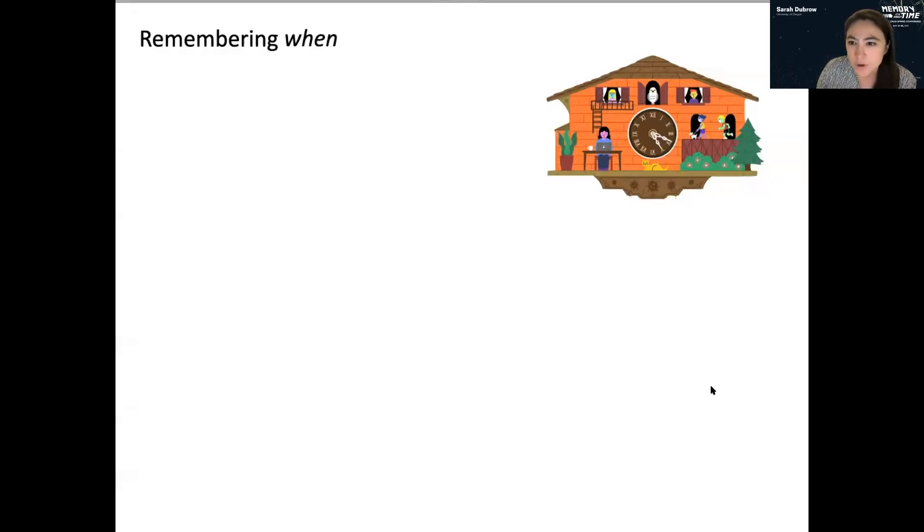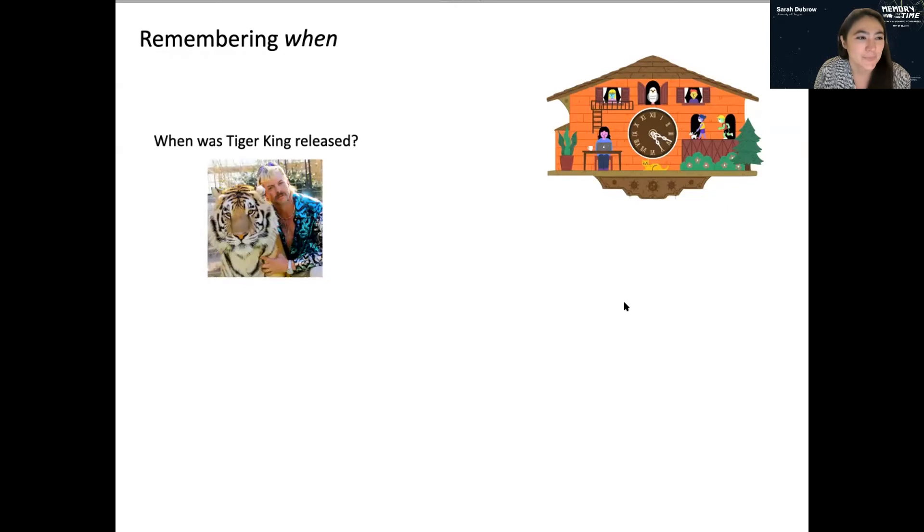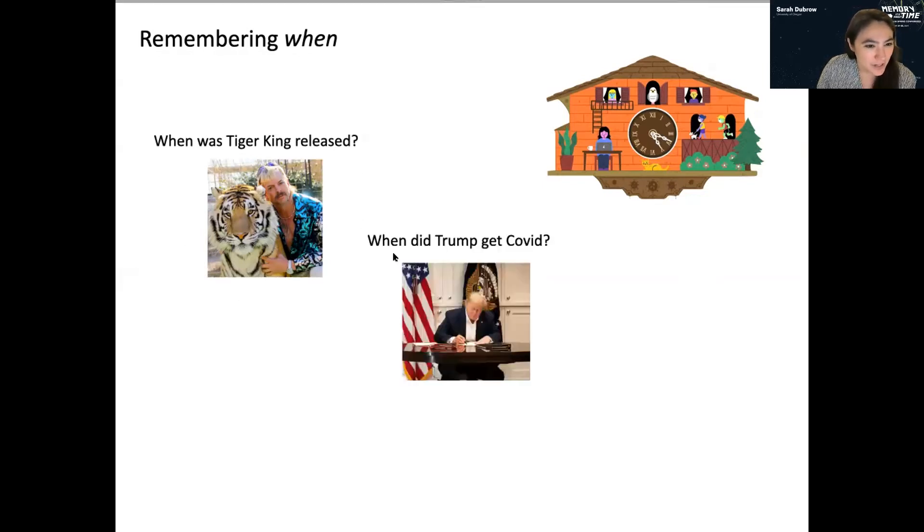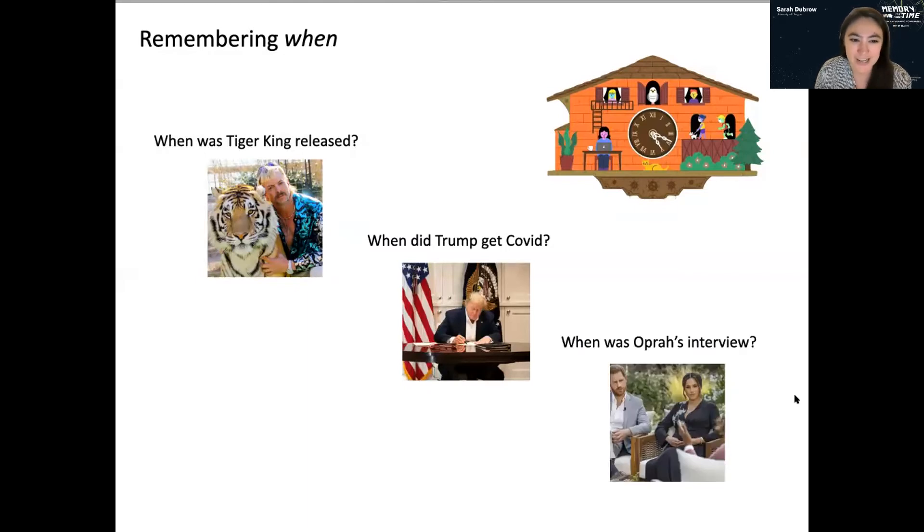So it's those kind of extra long time scale memories that I'm particularly interested in talking about today and specifically how we remember the when of those events. So for example, maybe you want to recall some recent cultural shared events like when Tiger King was released, the documentary of the infamous Joe Exotic, or when Trump got COVID, or maybe when Oprah's interview with Meghan Markle and Prince Harry was. So if you thought to yourself 14 months, eight months and three months, then you're in really great shape.